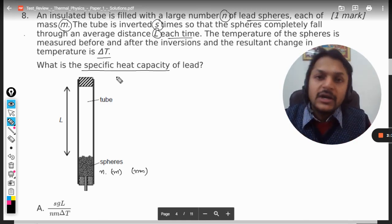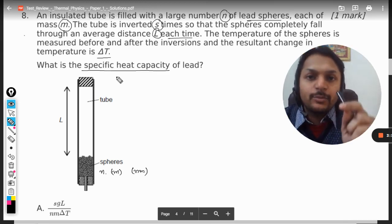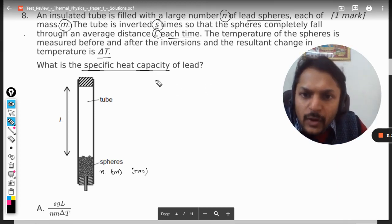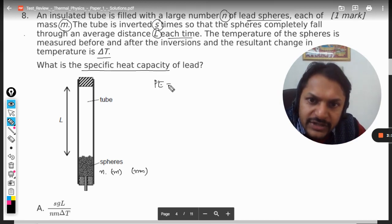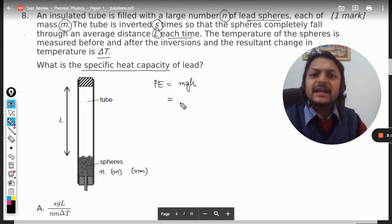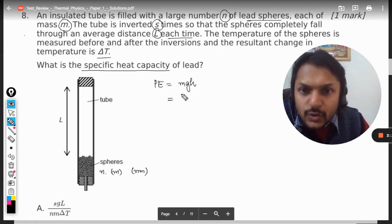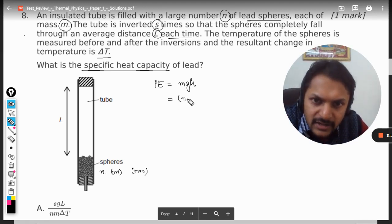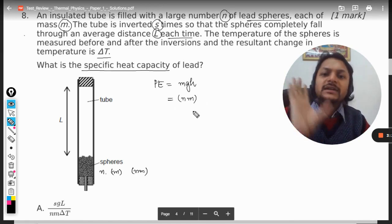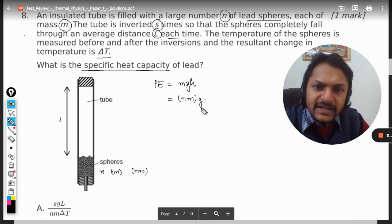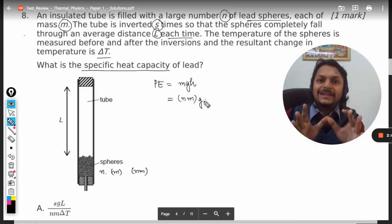What is that? That is gravitational potential energy. So what is the formula for gravitational potential energy? mgh - m is the mass that has fallen through the height. What is the total mass? n into m is the total mass, g will be taken as gravity.